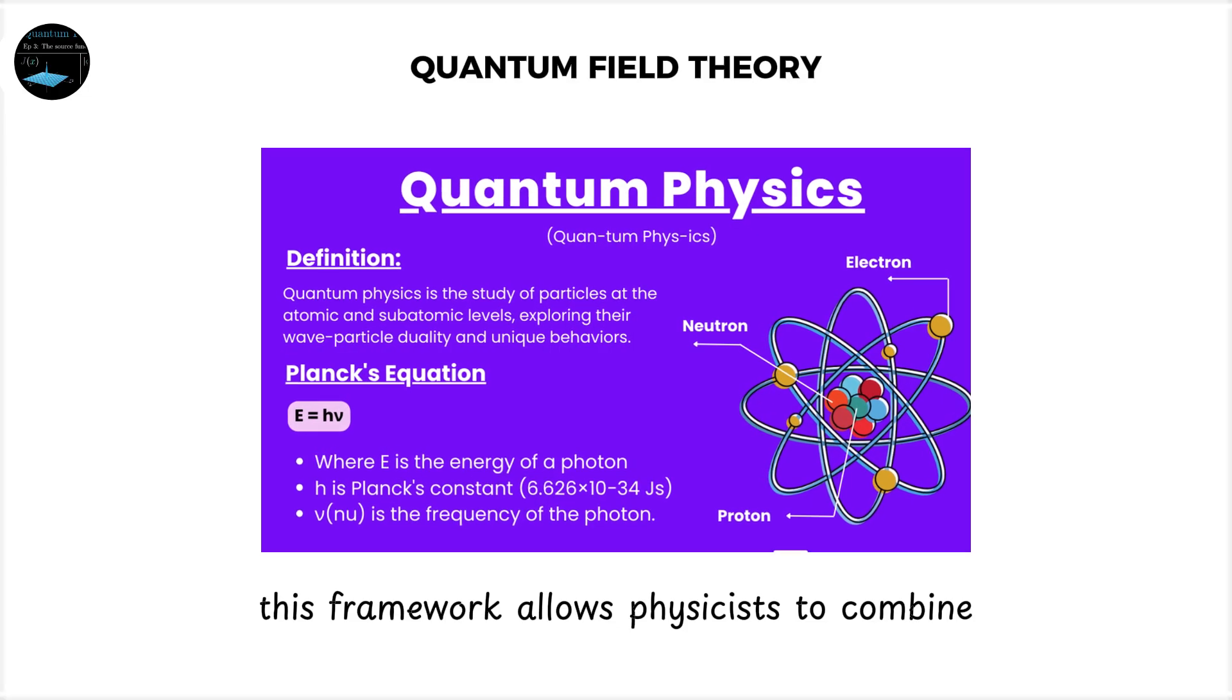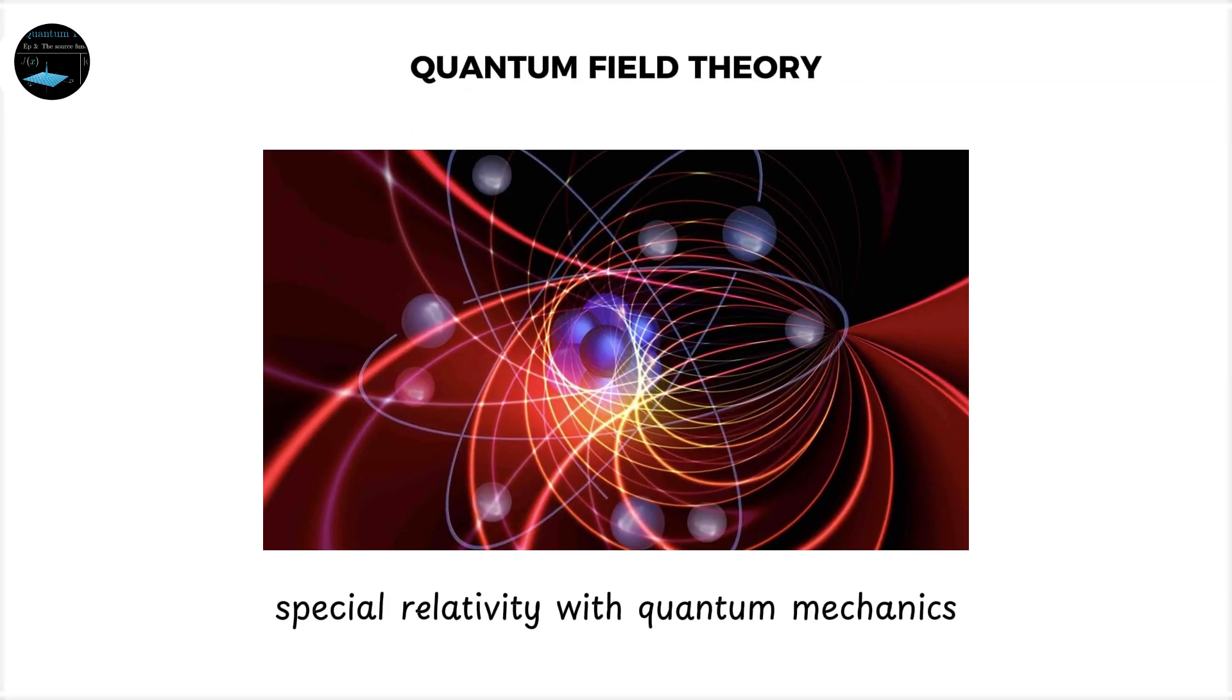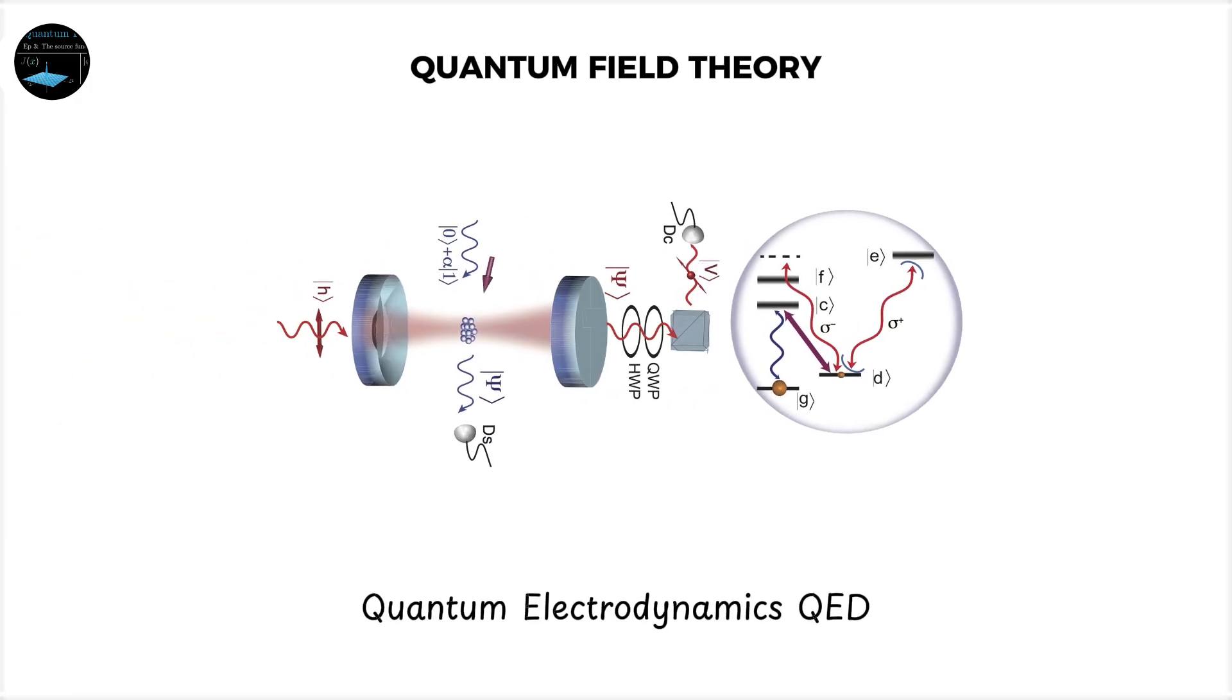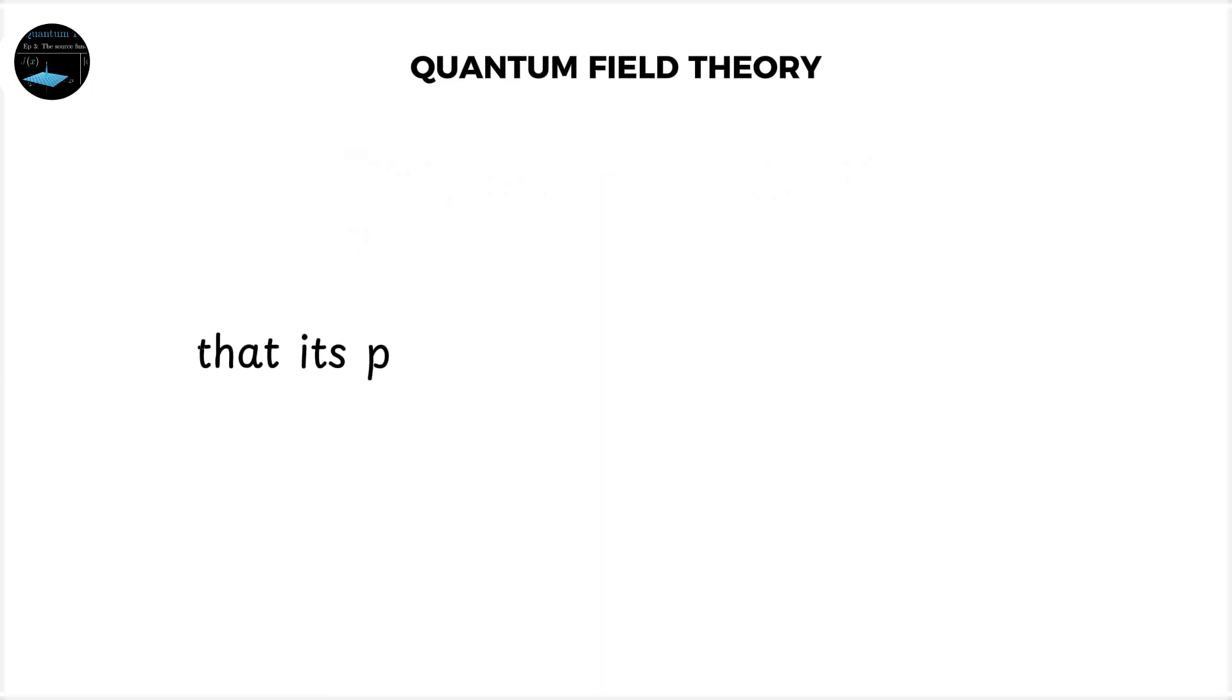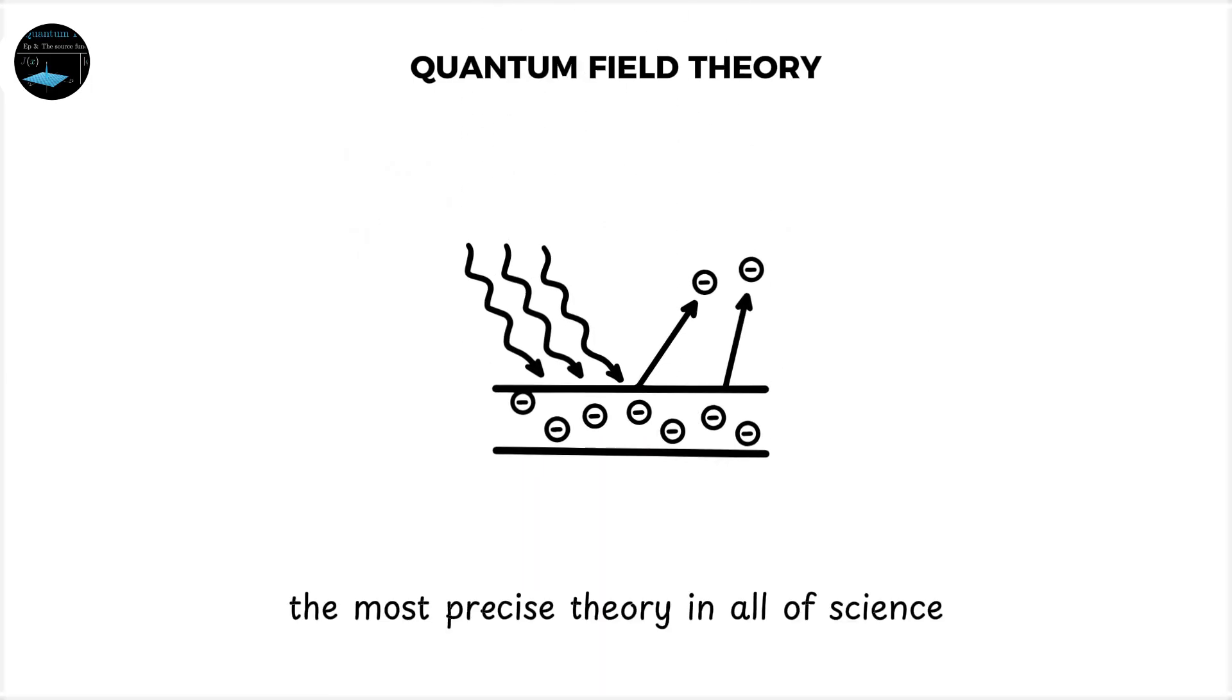This framework allows physicists to combine special relativity with quantum mechanics, creating precise predictions for particle interactions. Quantum electrodynamics, QED, a branch of QFT, is so accurate that its predictions have been confirmed to one part in a trillion, the most precise theory in all of science.